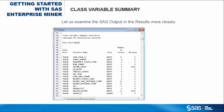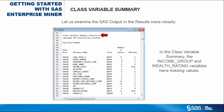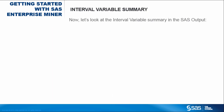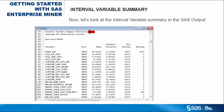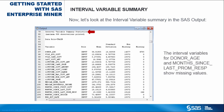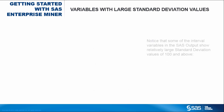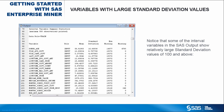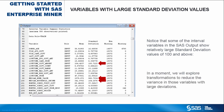Let us examine the SAS output in the results more closely. In the class variable summary, the income group and wealth rating variables have missing values. In the interval variable summary, the interval variables for donor age and months since last prom response also show missing values. Notice that some of the interval variables show relatively large standard deviation values of 100 and above. We will explore transformations to reduce the variance in those variables with large deviations.